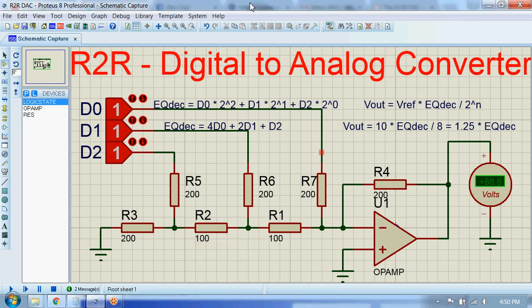Hi guys, we will see an R2R digital to analog converter. You can see the circuit is made up of a series of resistances having values of R and 2R, where R is 100 ohms and 2R is 200 ohms.